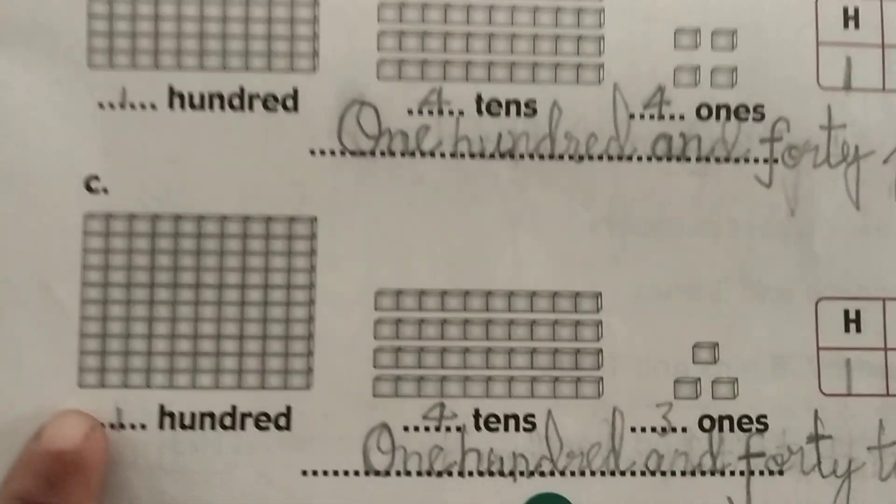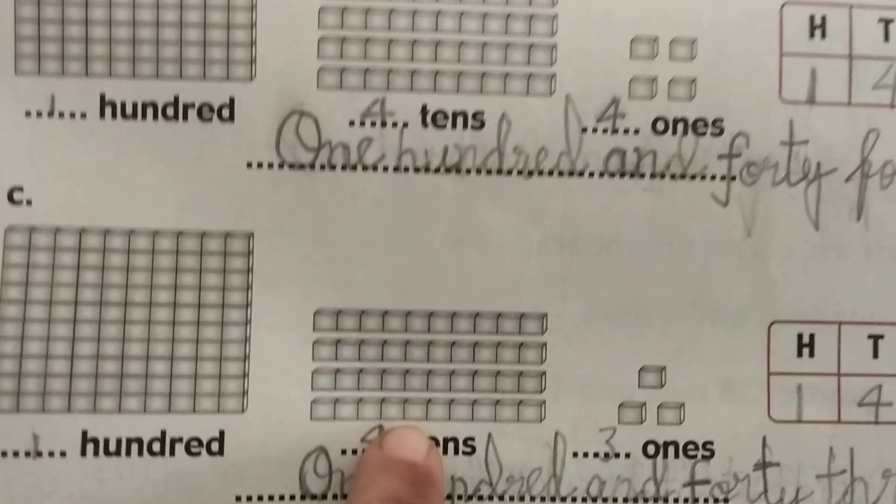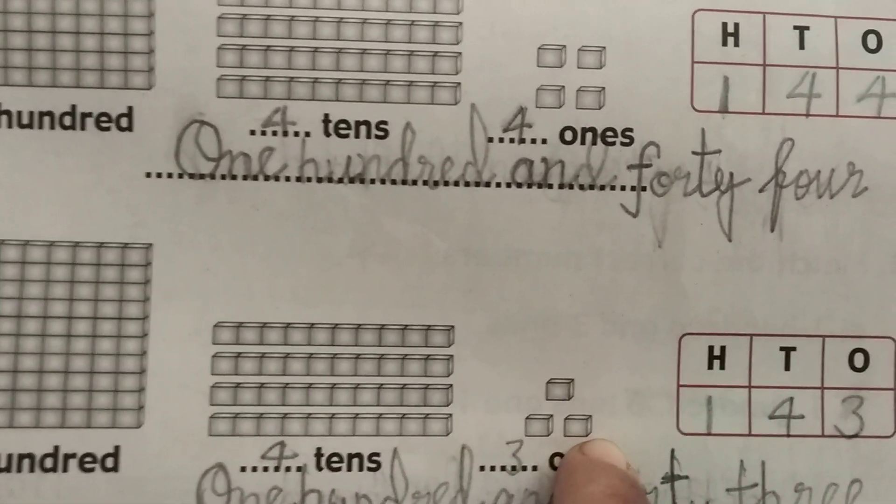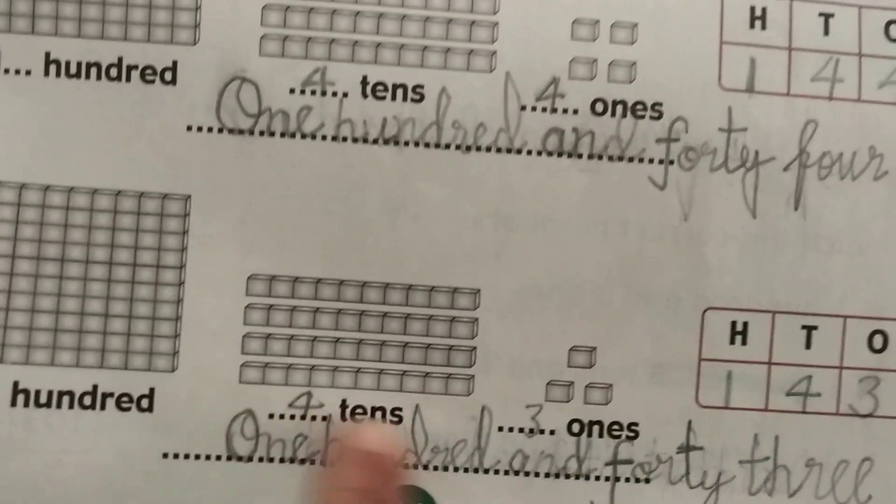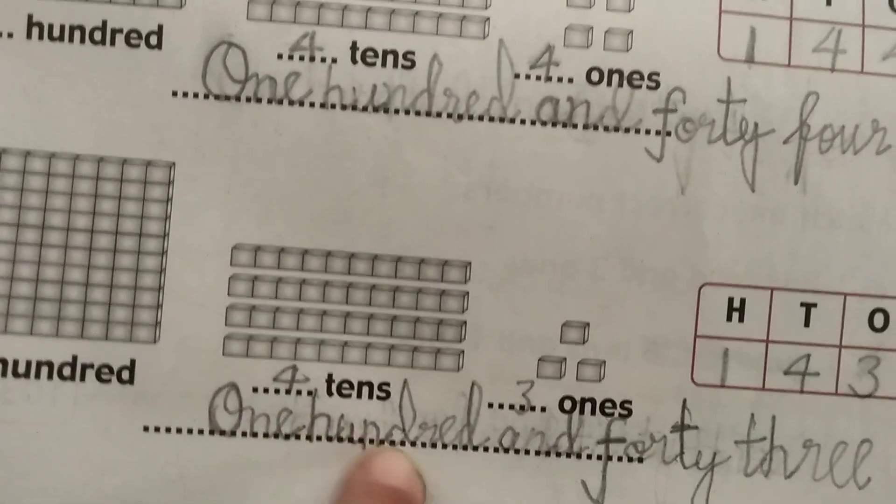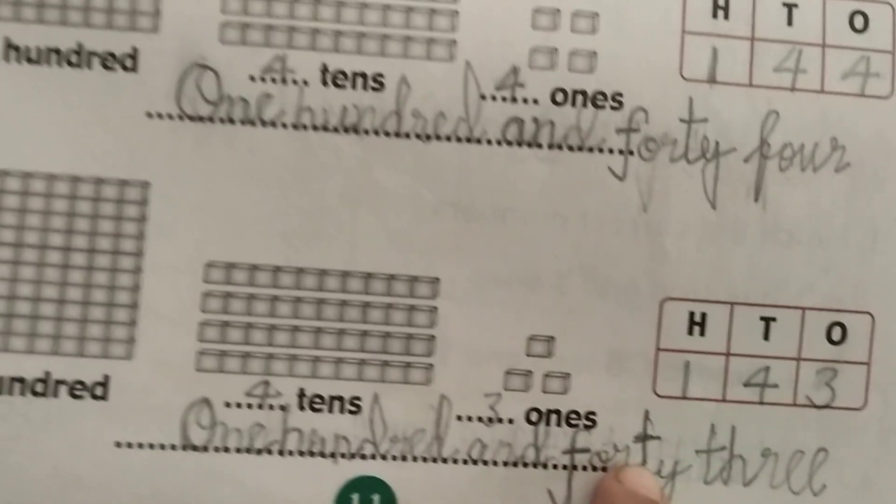The next one: 1 hundred, 4 tens, and 3 ones equals 143. Written as 143. So the number is 143.